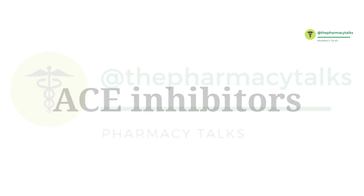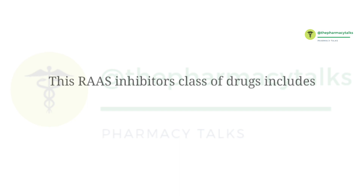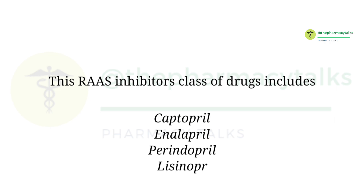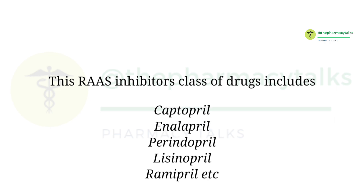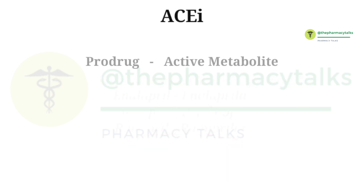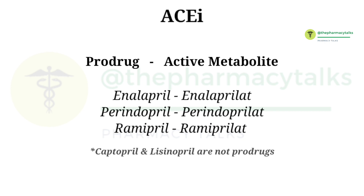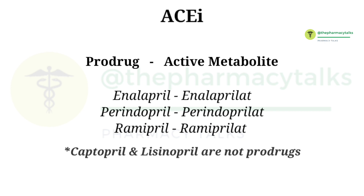This class of drugs includes Captopril, Enalapril, Perindopril, Lisinopril, Ramipril, and many more. The most important drug amongst them is Perindopril. An amazing fact is that all of these ACE inhibitors are pro-drugs, except Captopril and Lisinopril.